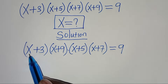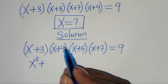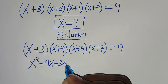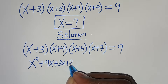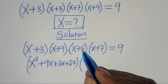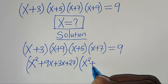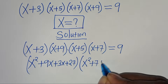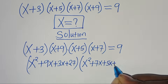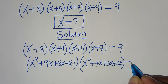Expanding (x + 3)(x + 9): we get x² + 9x + 3x + 27, which gives x² + 12x + 27. Expanding (x + 5)(x + 7): we get x² + 7x + 5x + 35, which gives x² + 12x + 35. The product of these two expressions equals 9.